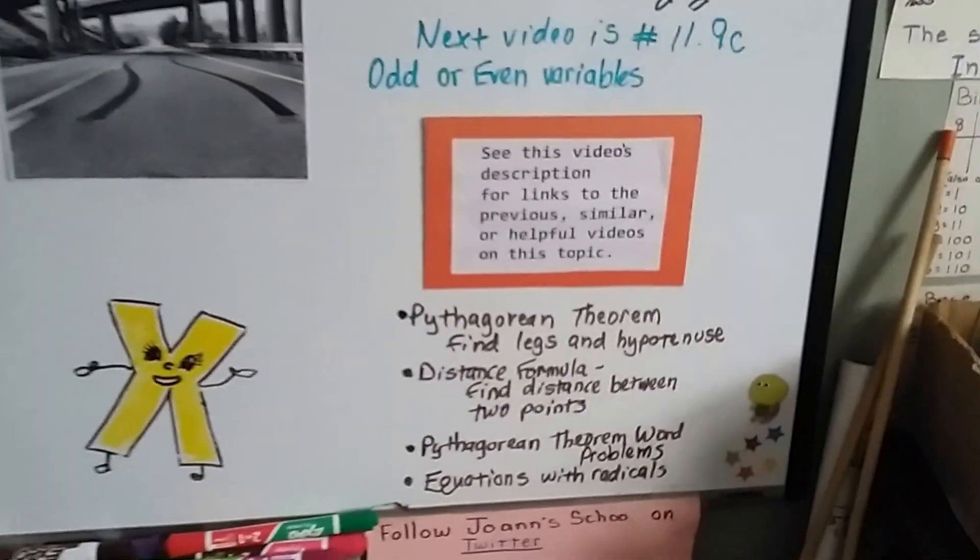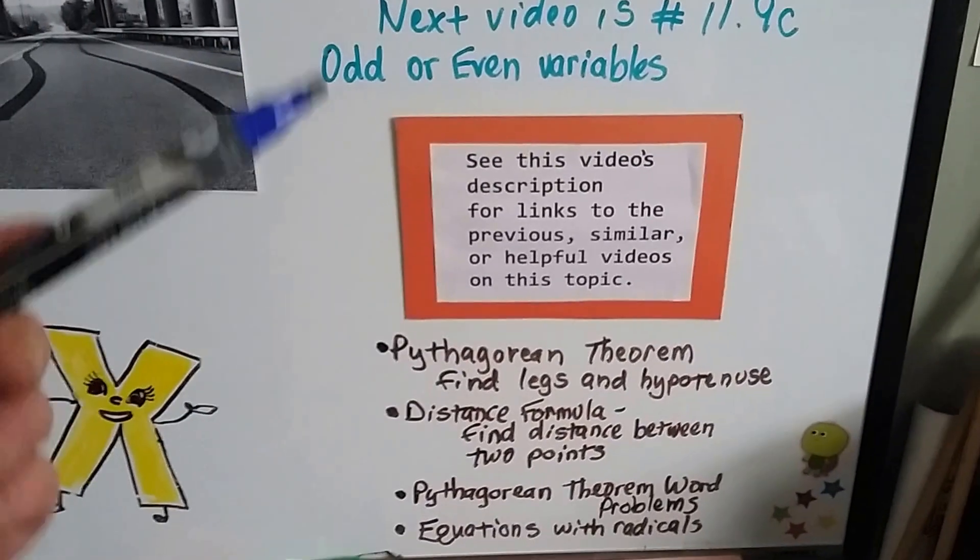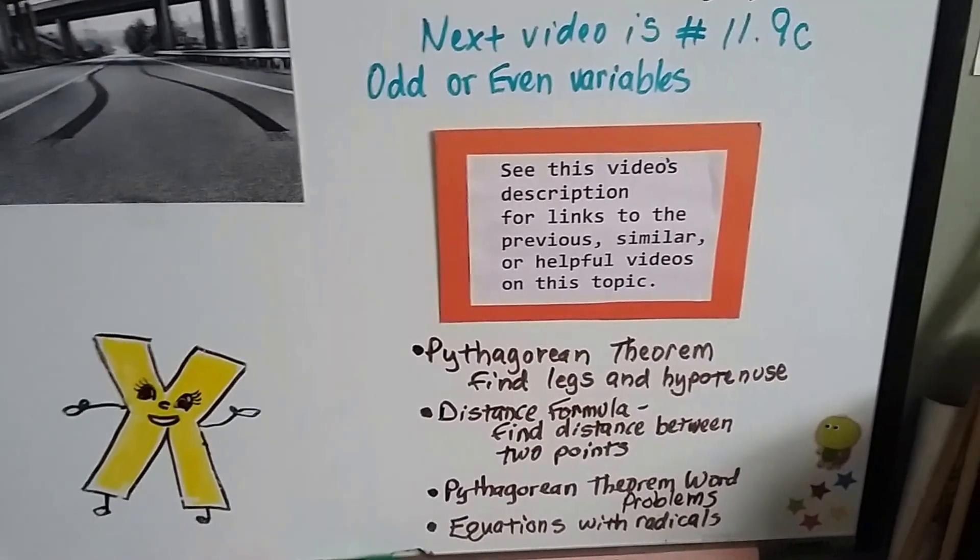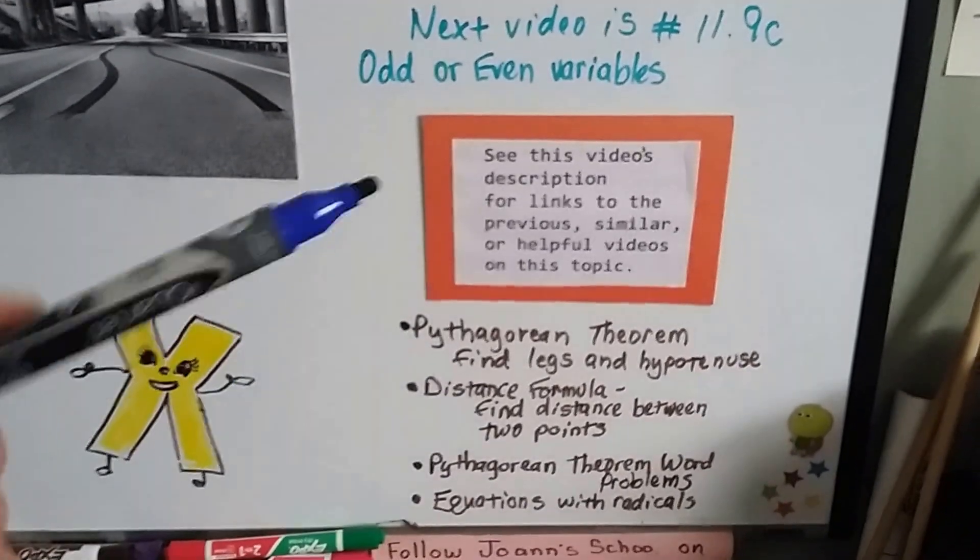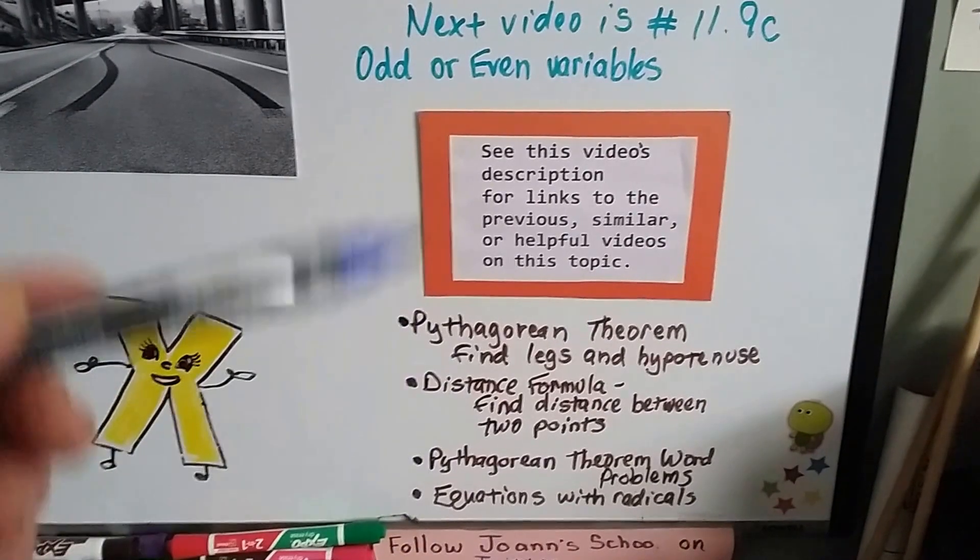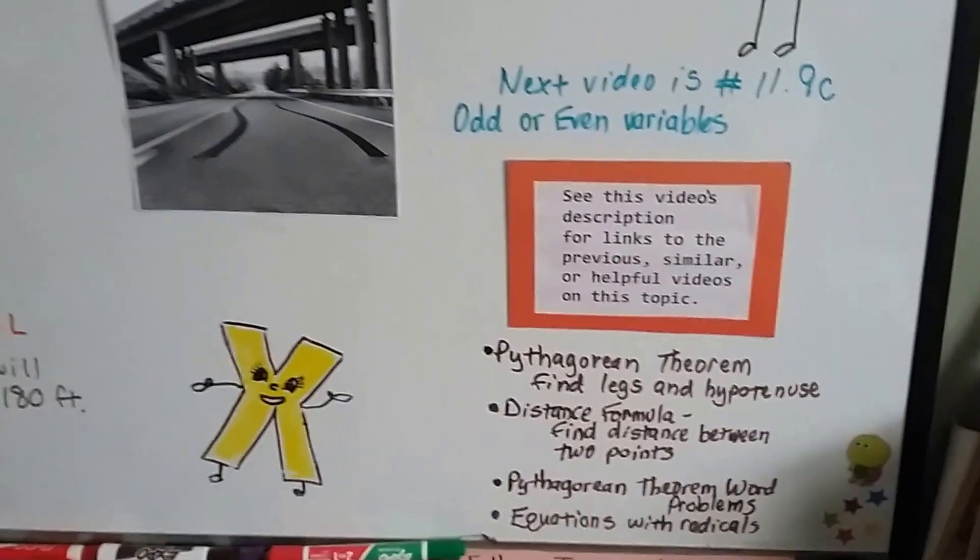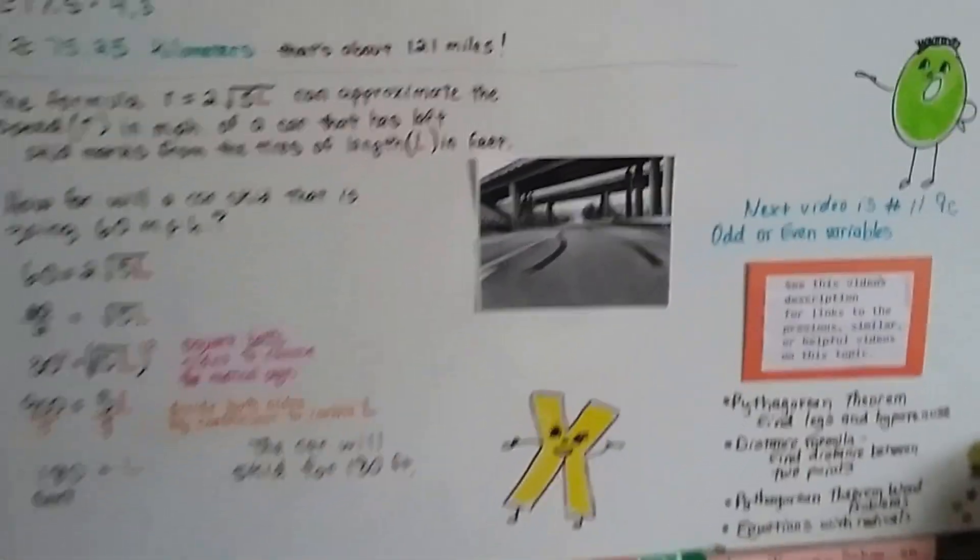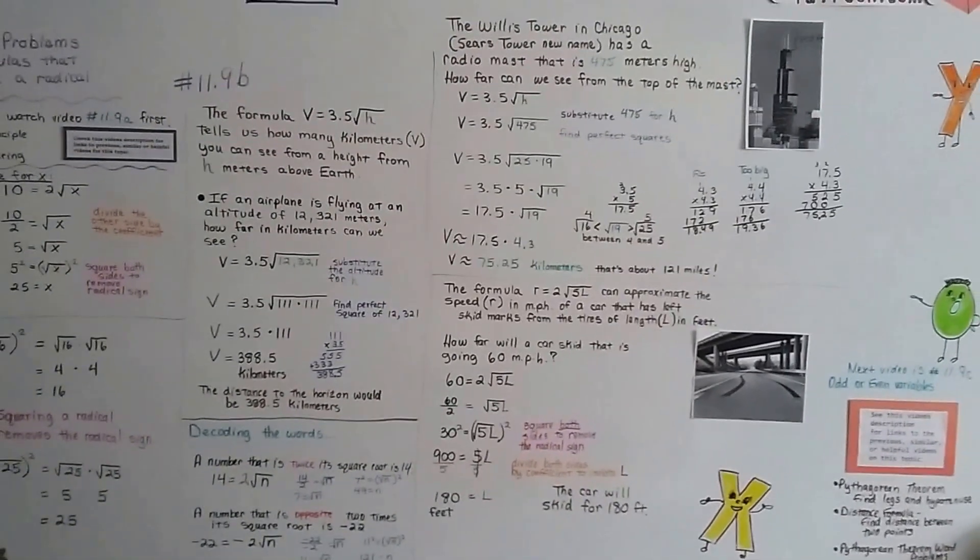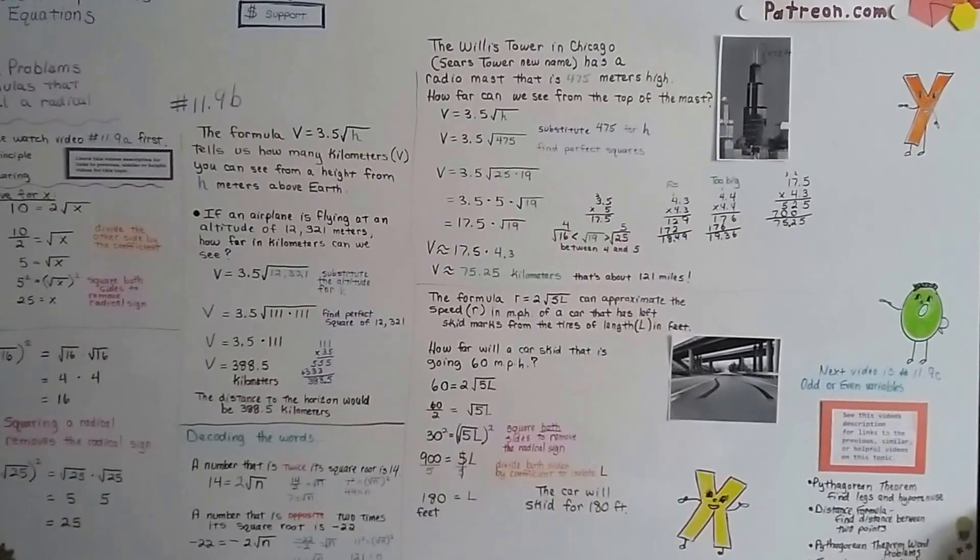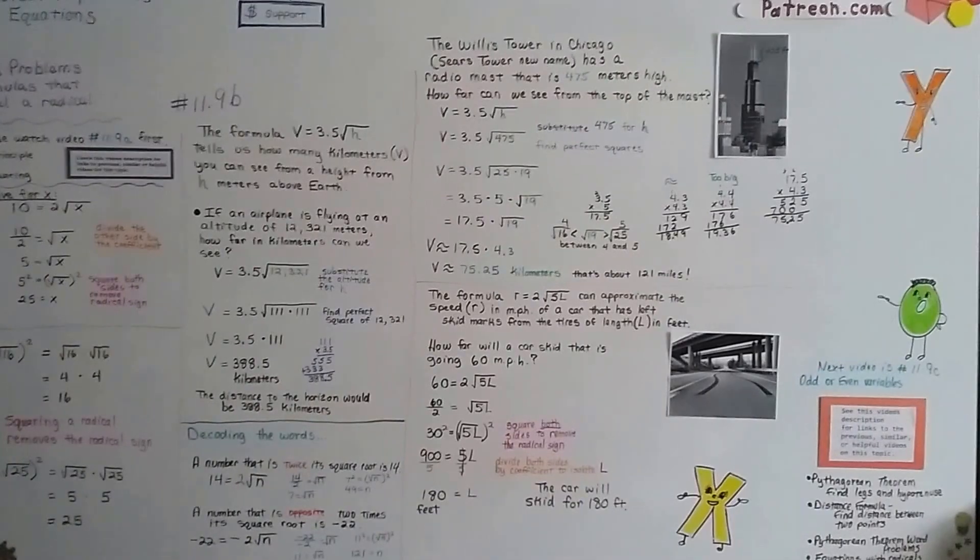Our next video is 11.9C. We're going to talk about odd or even variables. This is mentioned in a lot of the standardized tests that you take in school. I thought it would be really helpful to talk about this before we go on to chapter 12. In this playlist, if you want to go to the description, there's going to be the links to the previous videos or helpful videos. I'll even put my algebra word problem playlist in there to help you out if you need that. I keep updating it every time I add another algebra word problem. I'll see you next video. Keep your chin up. We're going to be fine. We're almost done with Algebra 1.